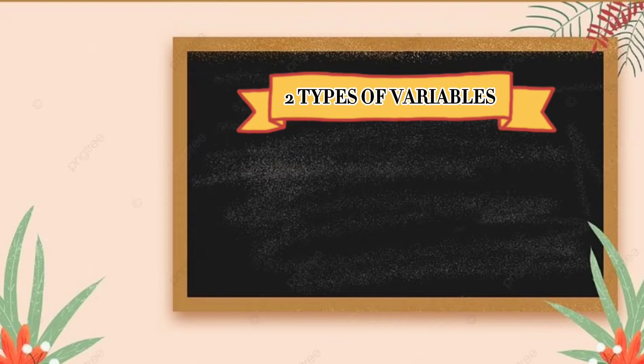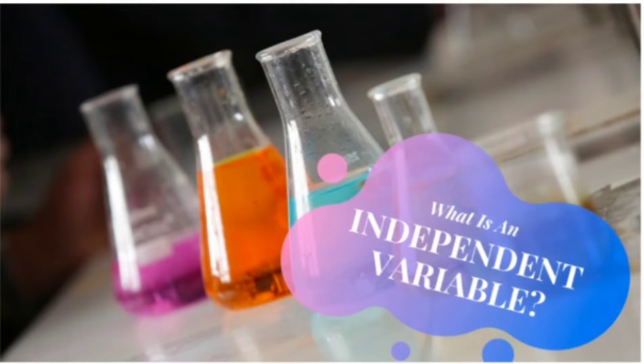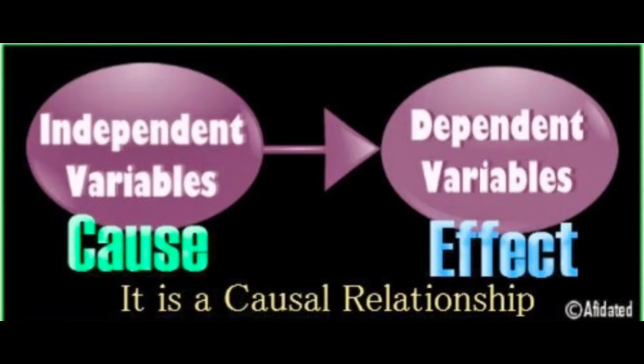There are two basic types of variables namely independent variable and dependent variable. What is independent and dependent variable? The independent variable is the experimental variable. It also is referred to as the cause or causal variable and the predictor variable. It is the variable that the researcher manipulates. While the dependent variable is often known as the effect, the subject variable or the criterion variable, it is caused or at least affected by the independent variable.